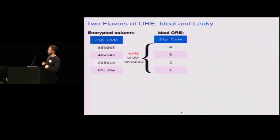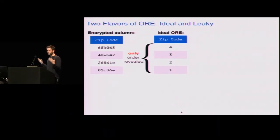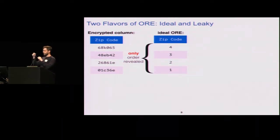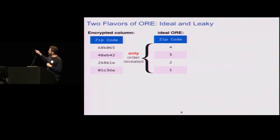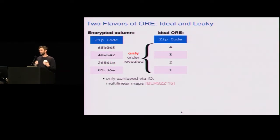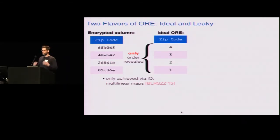With ideal ORE, an attacker who gets the column learns only what order the plaintexts are in — that the bottom one was the smallest zip code, the next one was the second smallest, and so on. The bad news is that to actually build this, you need indistinguishability obfuscation or multilinear maps — theoretical tools not clearly going to be efficient any time soon. It's an open problem to make them fast, and the deployments I'm talking about don't use this.